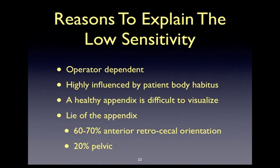In post-mortem studies, it was found that 60 to 70% of the population actually has a retrocecally oriented appendix, which will make identification of the appendix by ultrasound quite challenging.